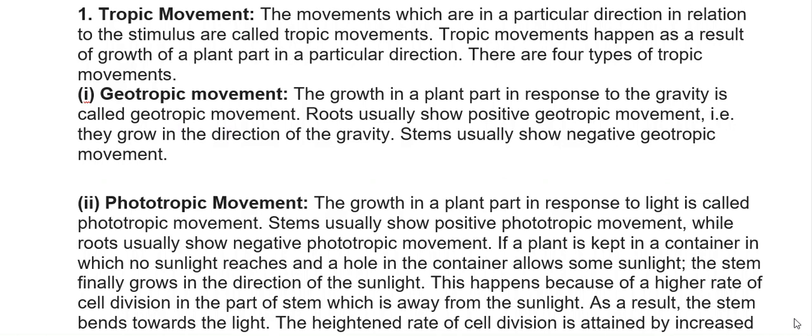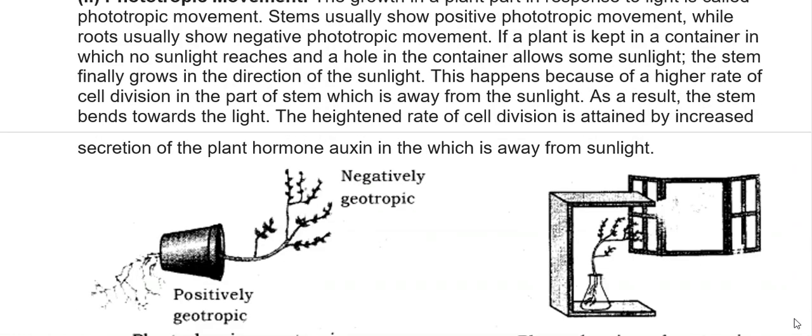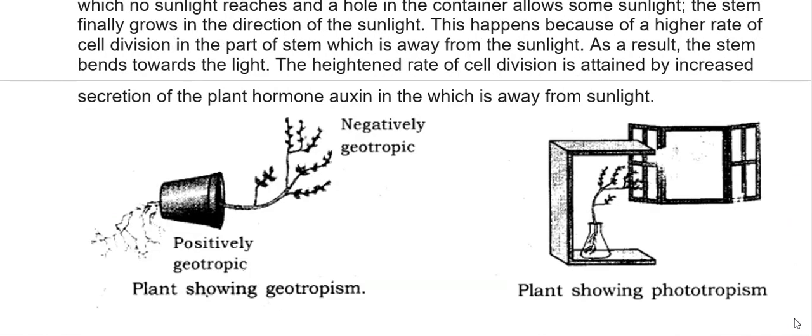Geotropic movement is the growth of a plant part in response to gravity. Roots usually show positive geotropic movement (they grow in the direction of gravity), while stems usually show negative geotropic movement. Phototropism: if a plant is kept in a container where sunlight reaches only through a hole, the stem grows towards the sunlight. This happens because of a higher rate of cell division in the part of the stem away from sunlight, causing the stem to bend towards the light. This increased cell division is due to increased secretion of the plant hormone auxin in the shaded part.